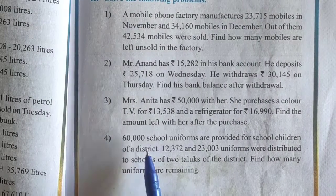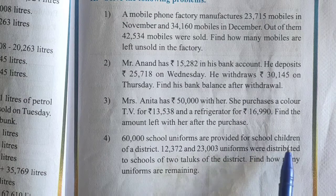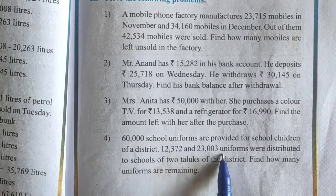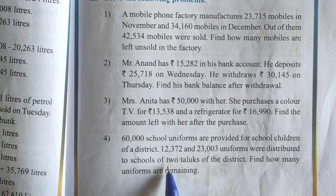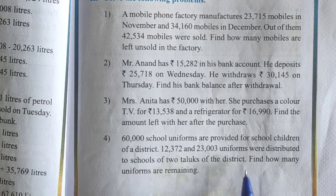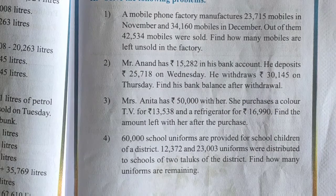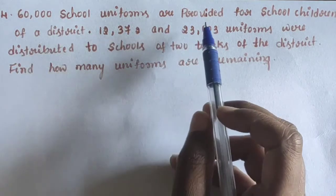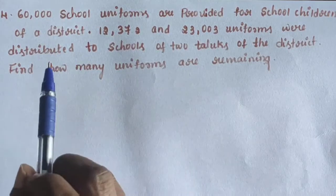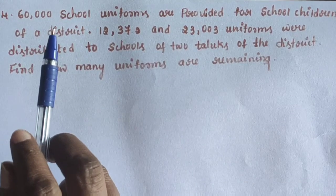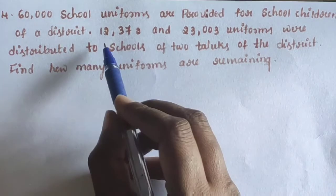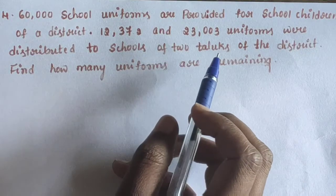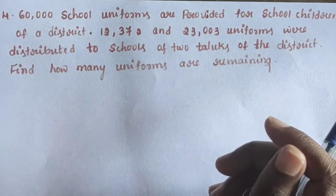Next, question number 4. 60,000 school uniforms are provided for school children of a district. 12,372 and 23,003 uniforms were distributed to schools of two taluks of the district. Find how many uniforms are remaining.